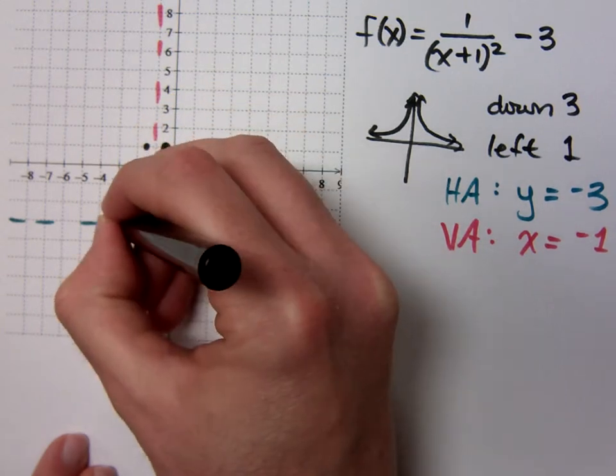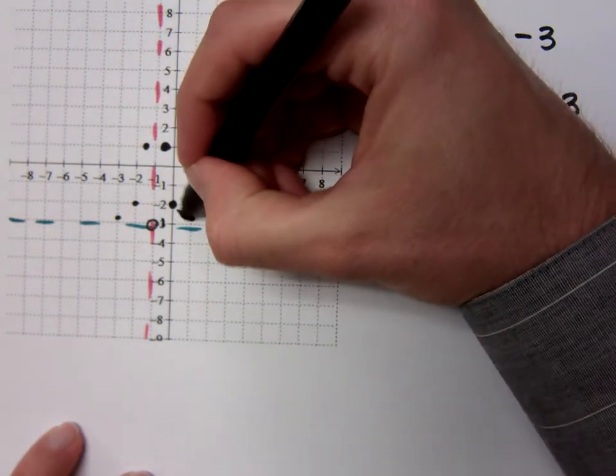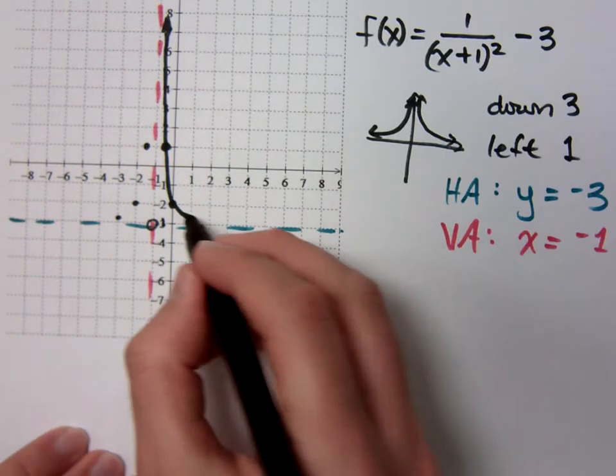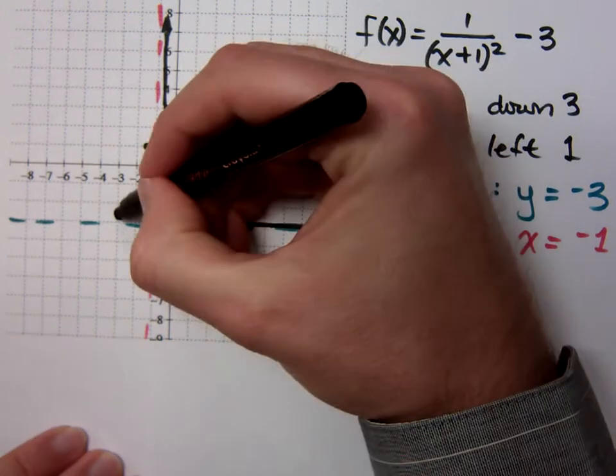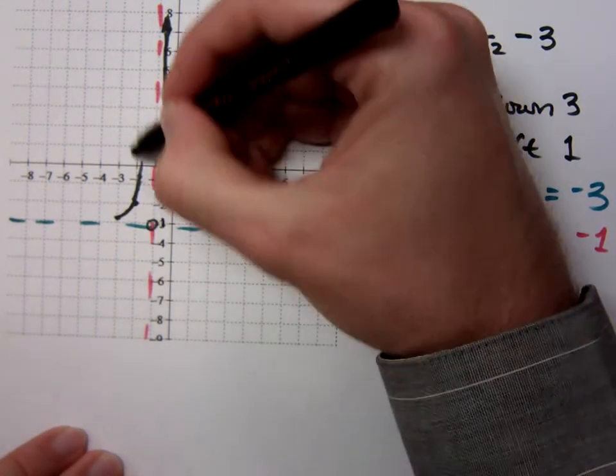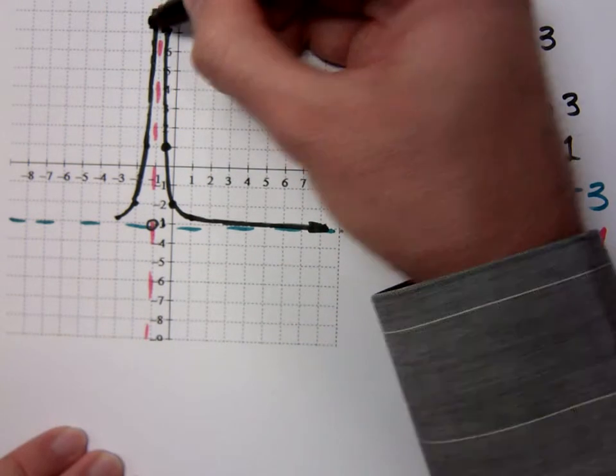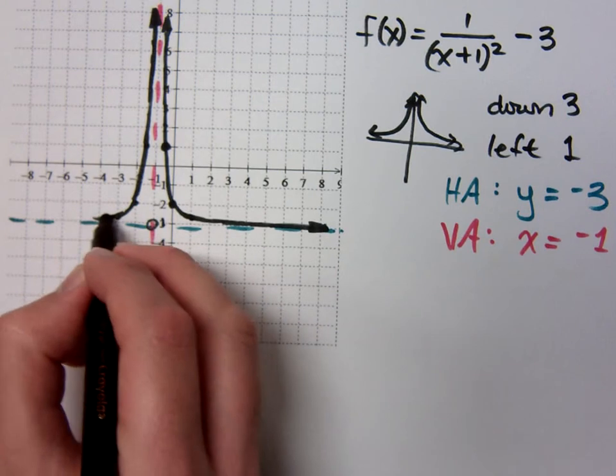...that vertical asymptote because that will act as your line of symmetry. Connect the dots. Make sure you get the shape the way it's supposed to be. I know it takes practice to get a nice smooth curve going through these points, but you can do it. Trust me.